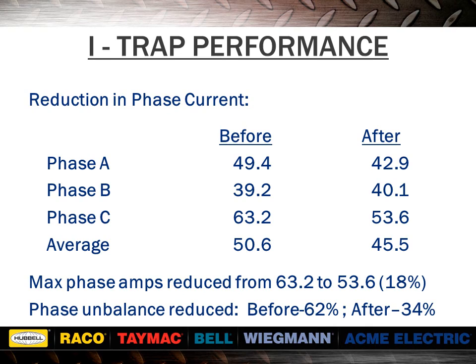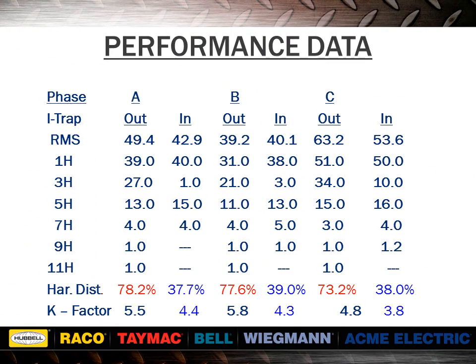The I-TRAP helps reduce unbalance in the phases, which helps reduce neutral current. The I-TRAP is not a harmonic filter, but it does tend to reduce total harmonic distortion in the phases. It also slightly reduces the k-factor of the system, which allows the supply transformer to operate a little cooler, resulting in longer life. If this transformer is ever replaced, it is recommended that it be replaced with a k-factor unit.